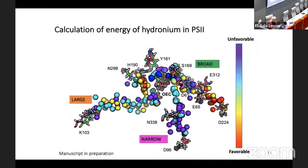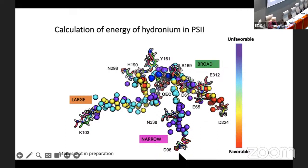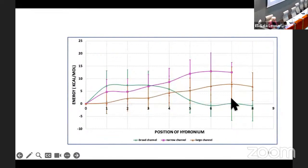Divya Kerr worked on a very complicated proton transfer pathway in photosystem II. She put the hydronium on every single water in the system, found the energy, and found that certain regions were more favorable — going out one way — and other regions were more unfavorable — going out another way. So even though we wouldn't have known which channel was more favorable just by looking, by looking at the hydronium energy along each water we could predict which is the active channel and which is less active.